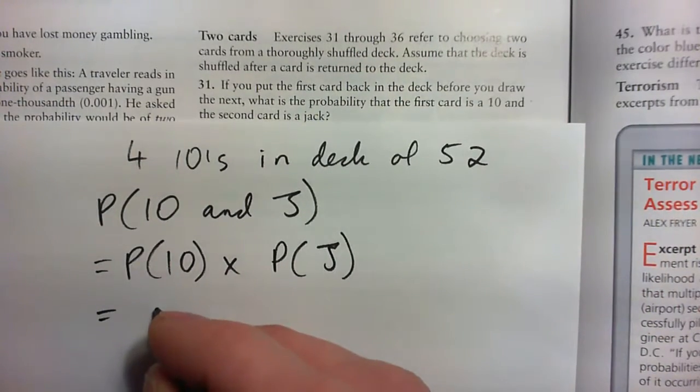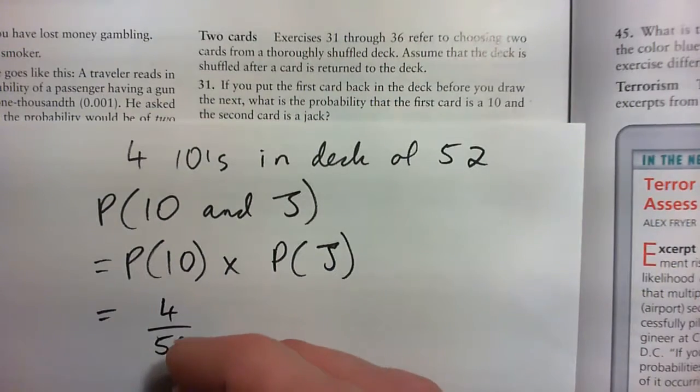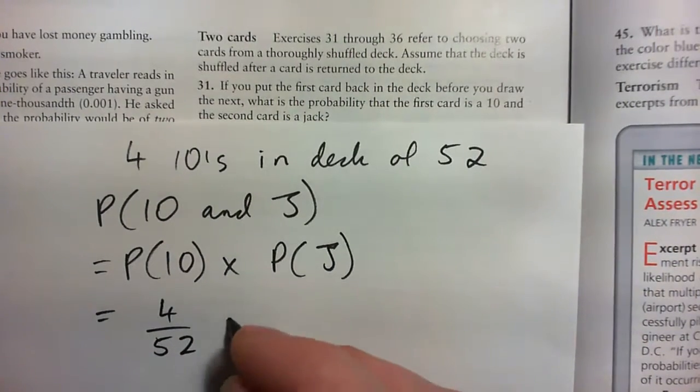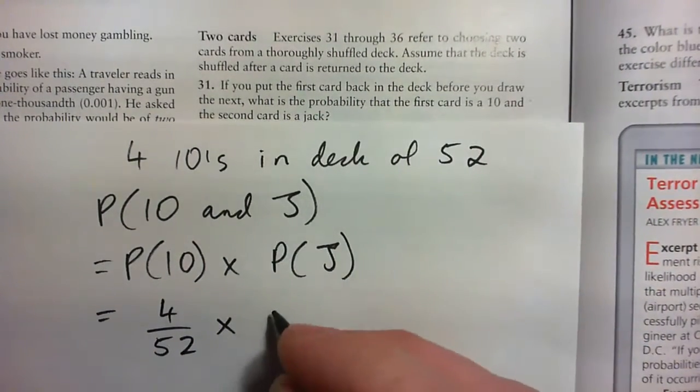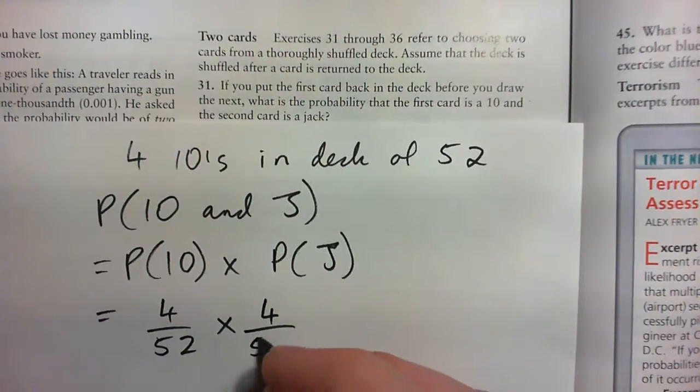Probability of getting a 10 is 4 out of 52. And there are also 4 jacks out of a deck of 52, so that's also 4 out of 52.